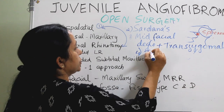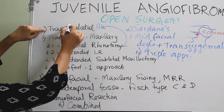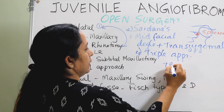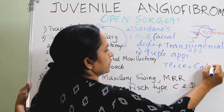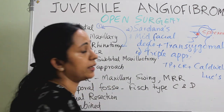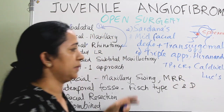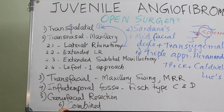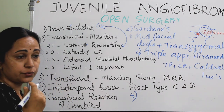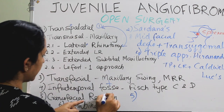Another commonly used combined approach is the triple approach — transpalatal plus lateral rhinotomy plus a Weber-Fergusson approach — known as the triple approach of Hiranandani. Another commonly used approach combines the infratemporal fossa approach with a transfacial approach, and this can also be combined with craniofacial resection.